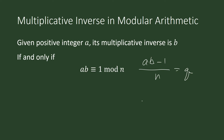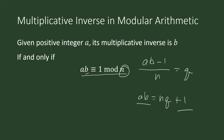Another way of looking at this using our Euclidean Division Theorem: a times b is congruent to 1 modulo n if and only if a times b equals n times q plus 1. So we shall look for that integer b such that when n divides a times b, it gives a remainder of 1.